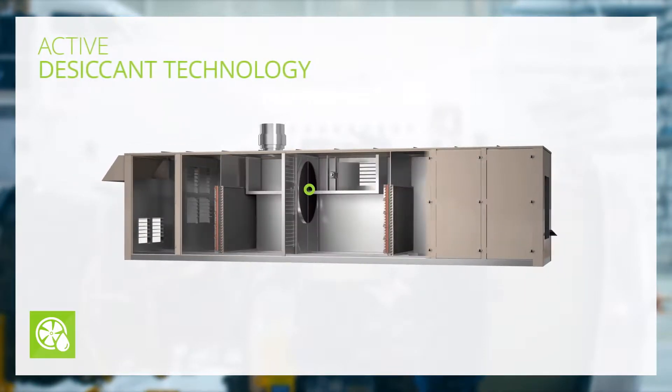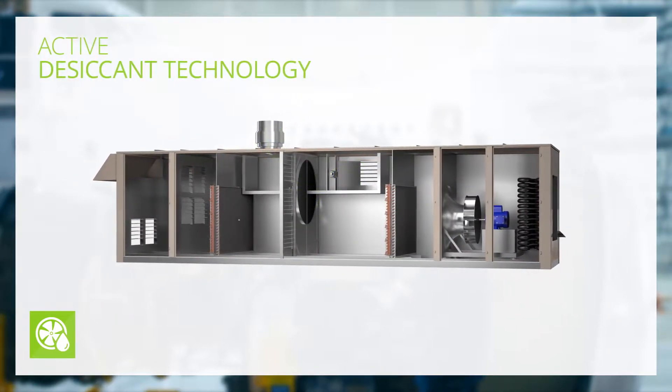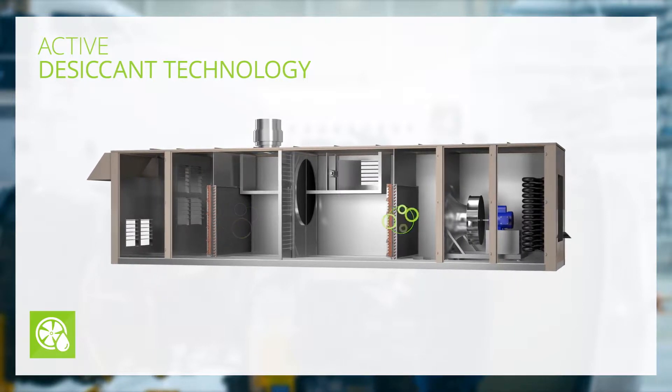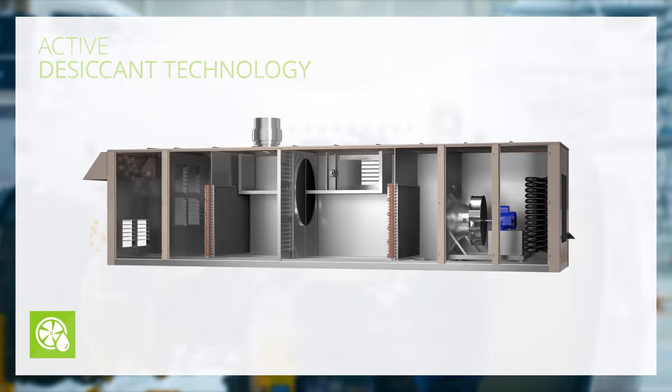Active desiccant technology incorporates a desiccant wheel and a heated drying cycle to remove moisture from the air. Traditional cooling coils are then used to reduce the temperature of the air to the desired levels.